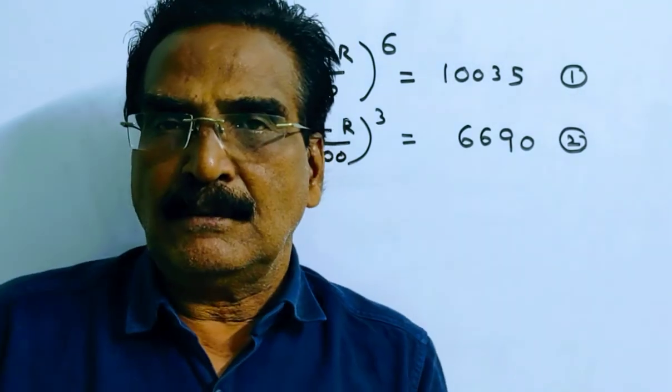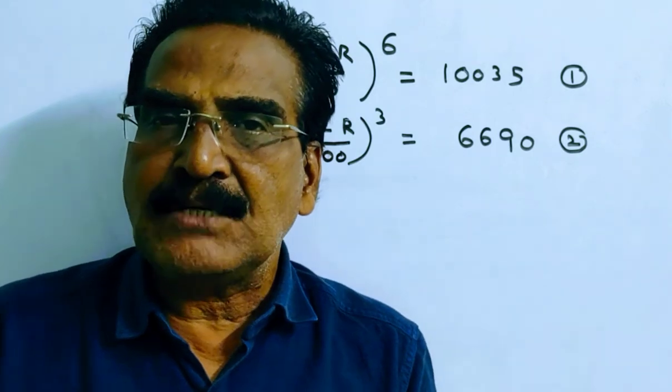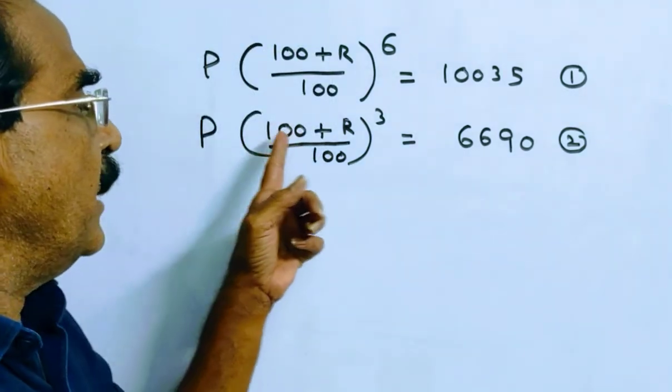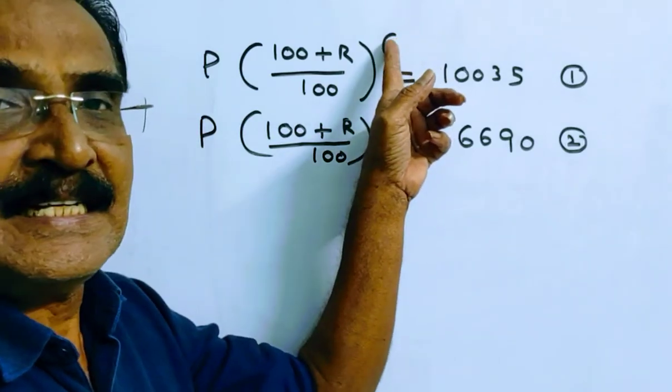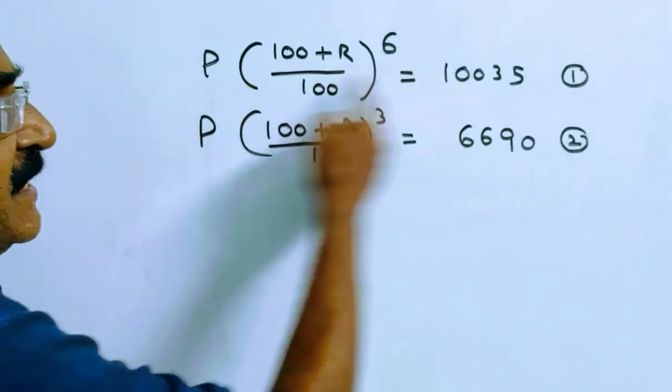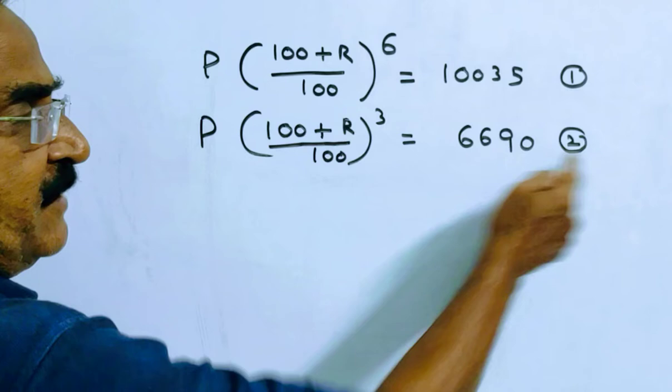Now friends, Compound Interest Amount A equals P into 100 plus R by 100 whole power n. Here n is 3, here n is 6. Friends, say this is equation 1, this is equation 2.